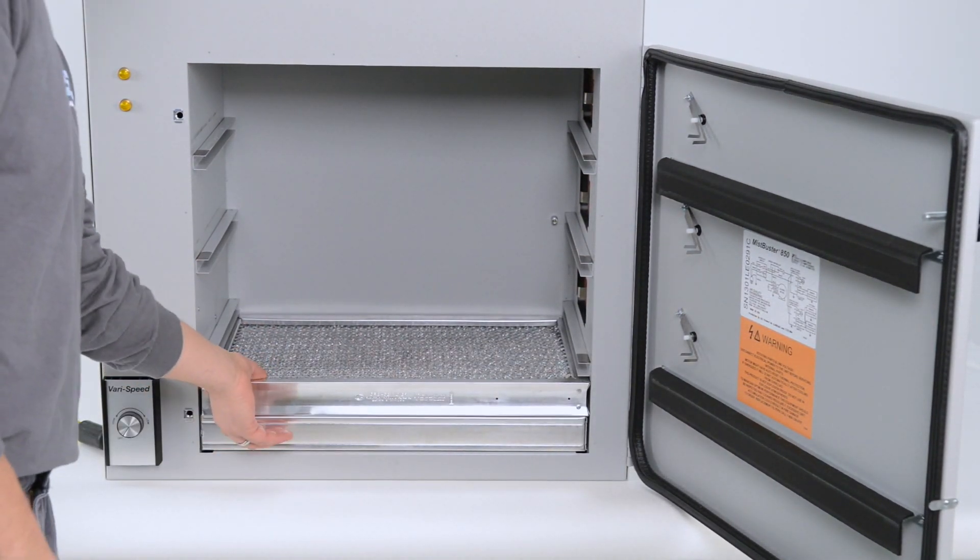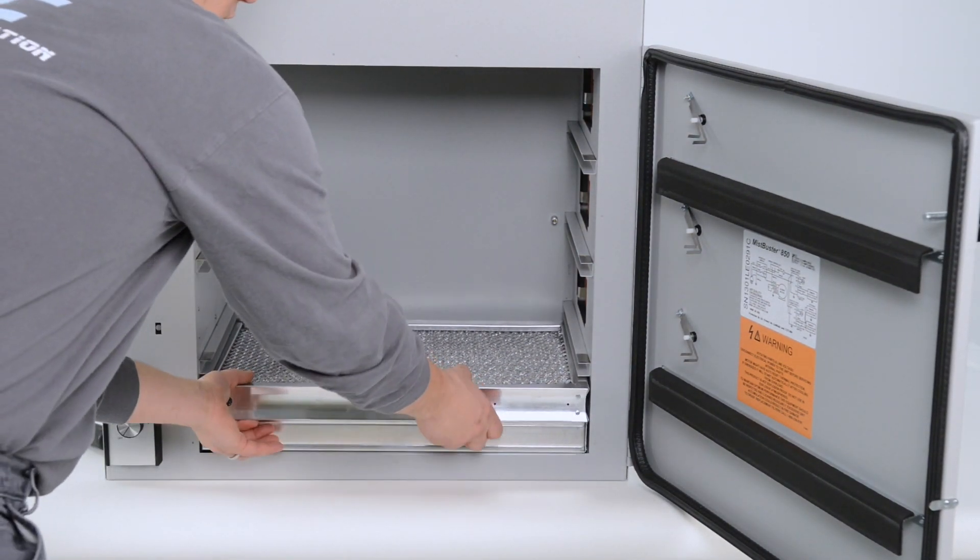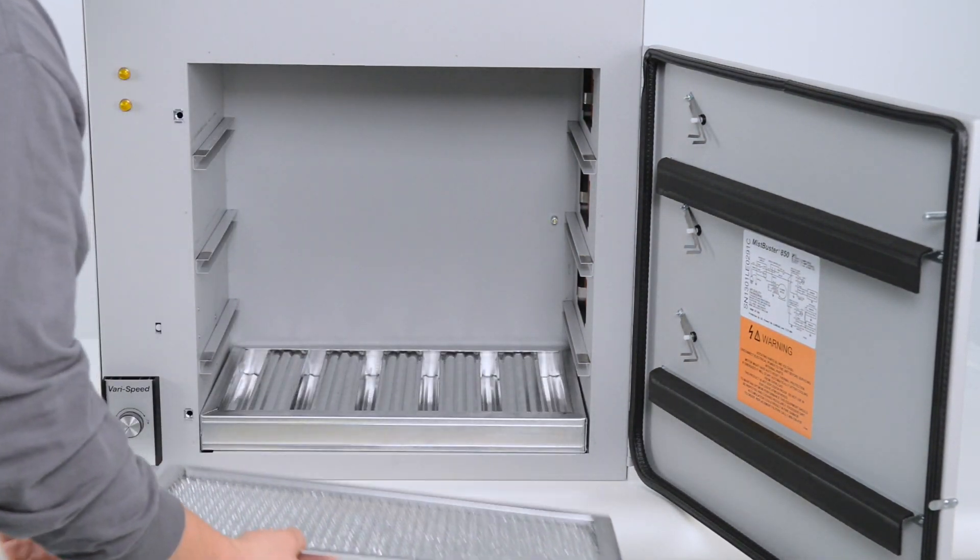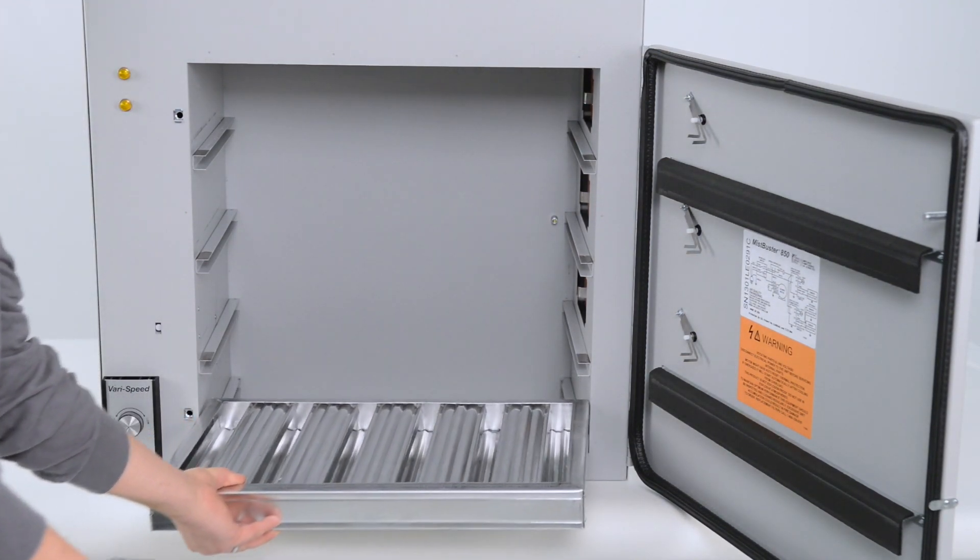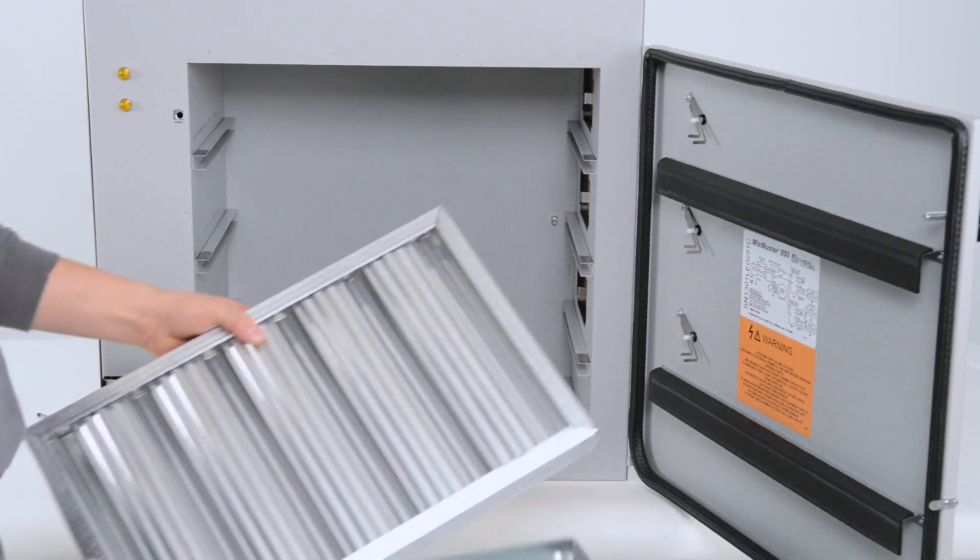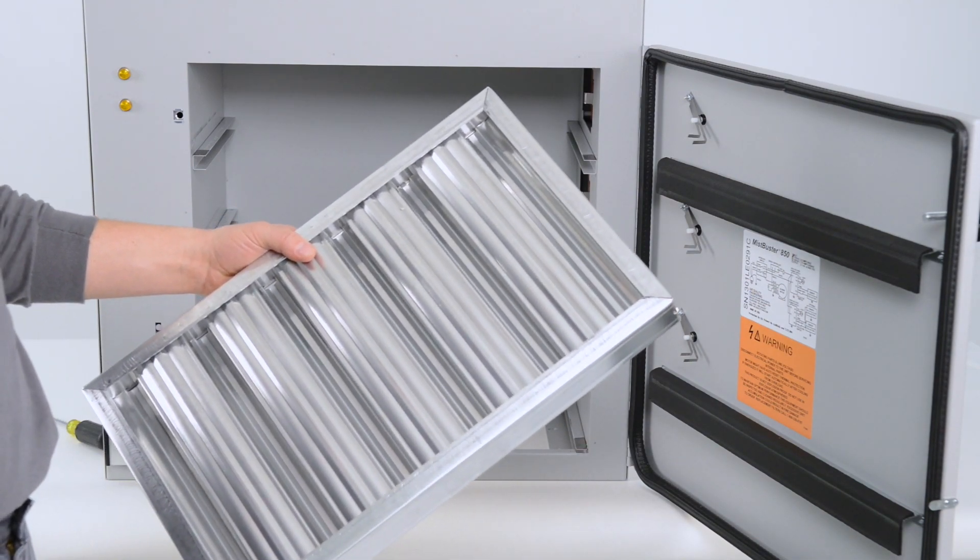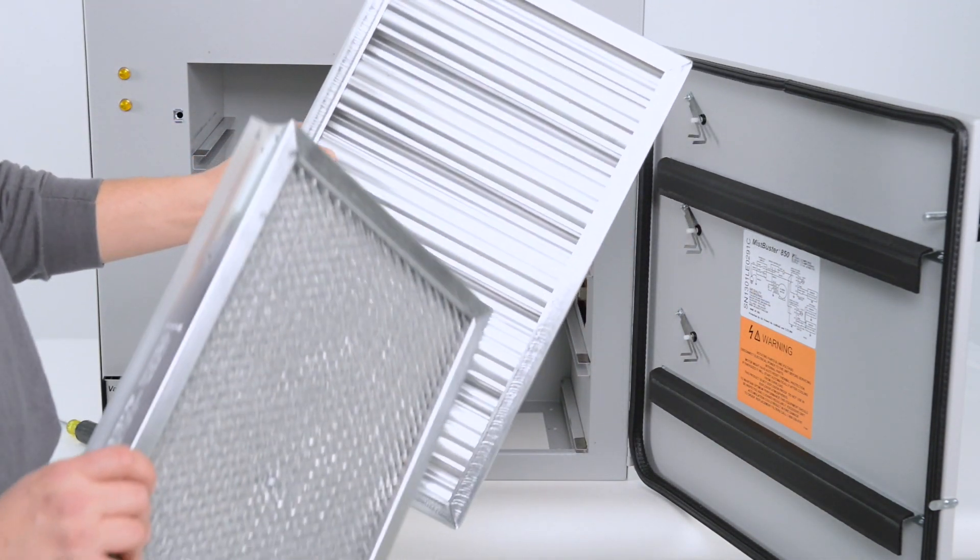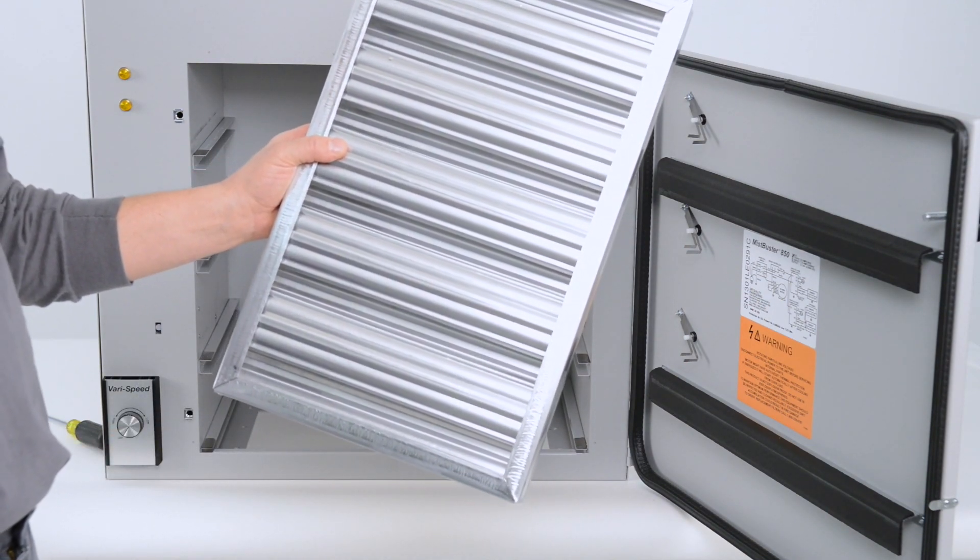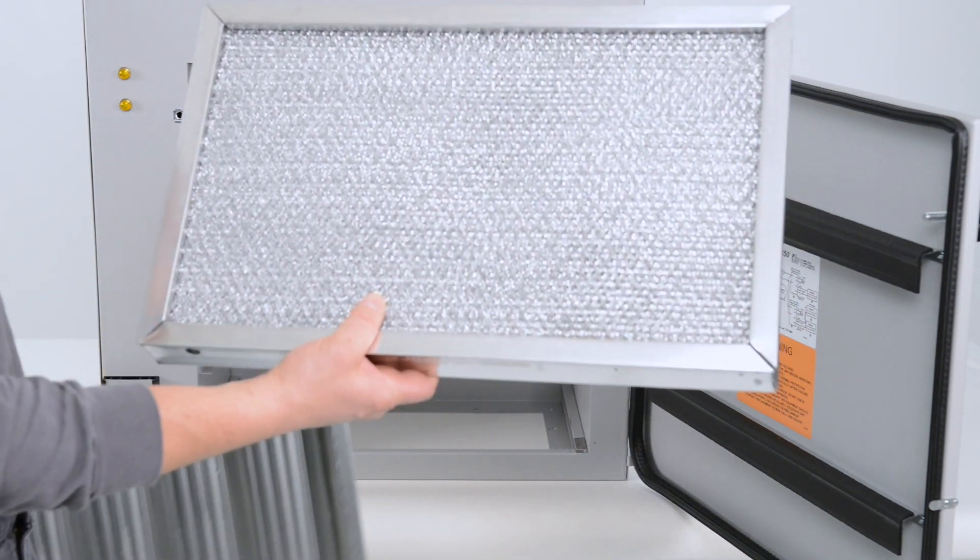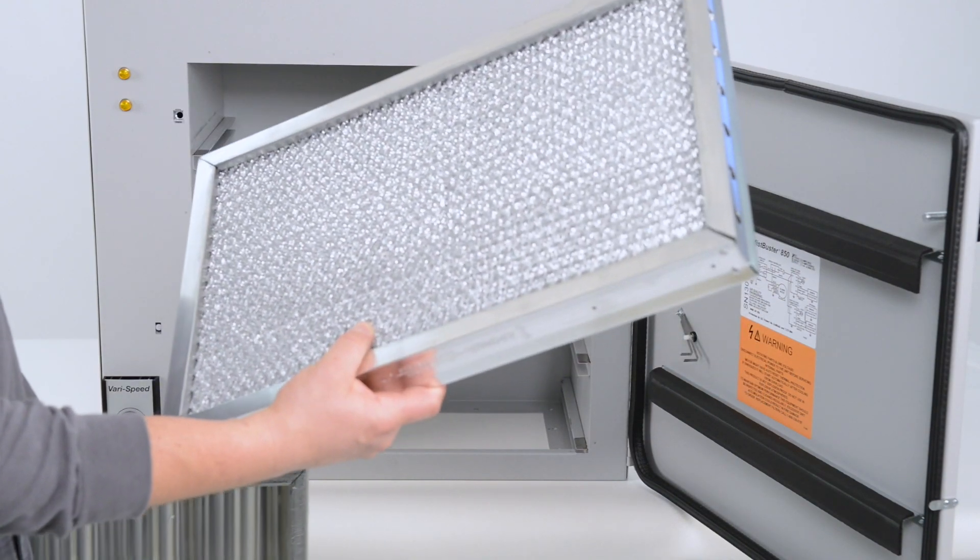Next, take out the top impinger section and the bottom impinger section. On the new series MistBuster units, the bottom impinger looks like this. It is more of a grease impinger, whereas the second stage impinger is a mesh filter.